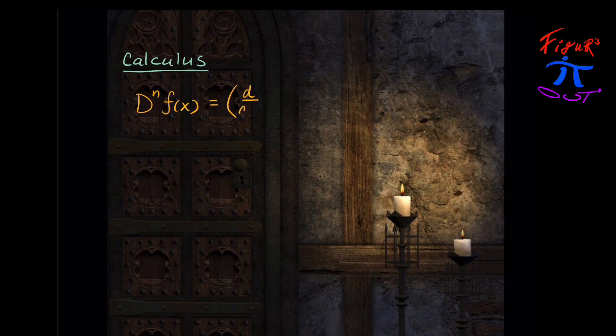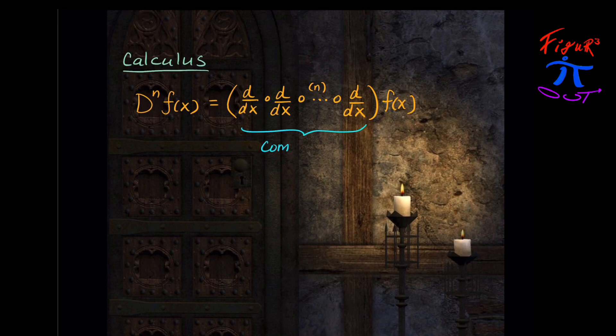Taking the n-th derivative of a function means that you're going to compose the derivatives one at a time, n times, on the function. So you'd take the first derivative, take the function that results, then take the derivative of that, and so on. Differentiation n times is a composition of differential operators — the n-th derivative is a composition of n derivatives.